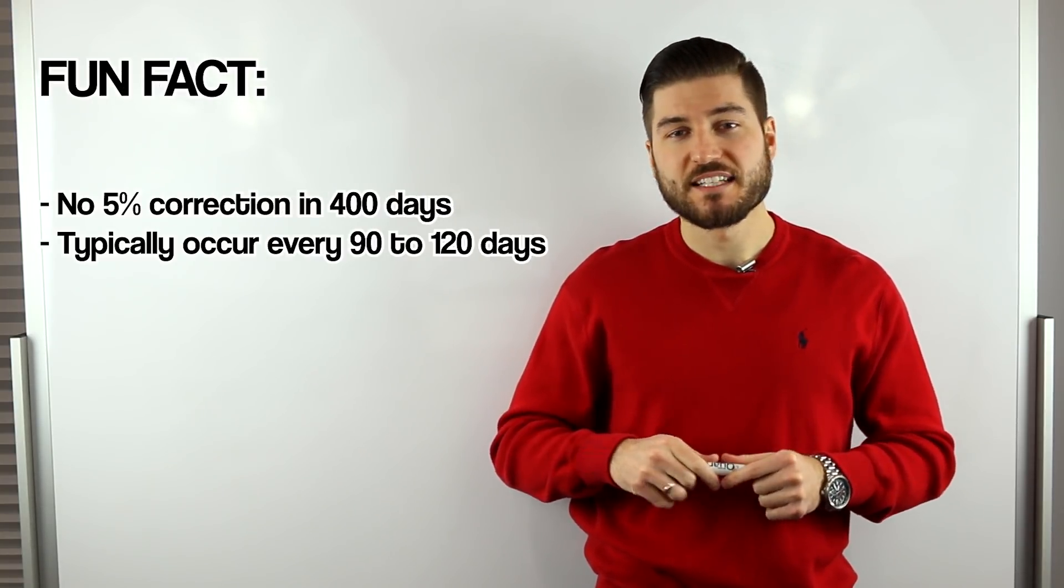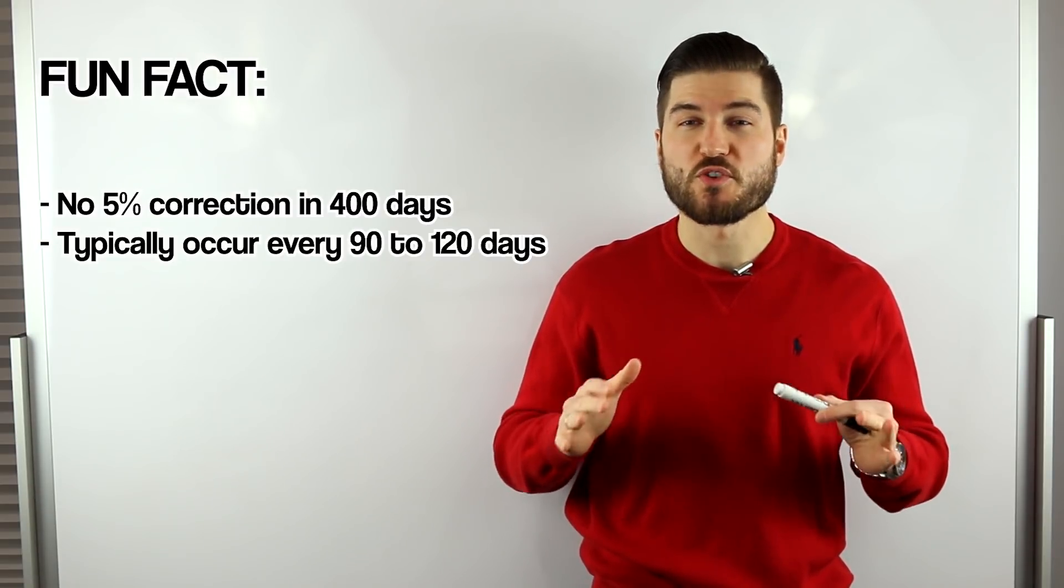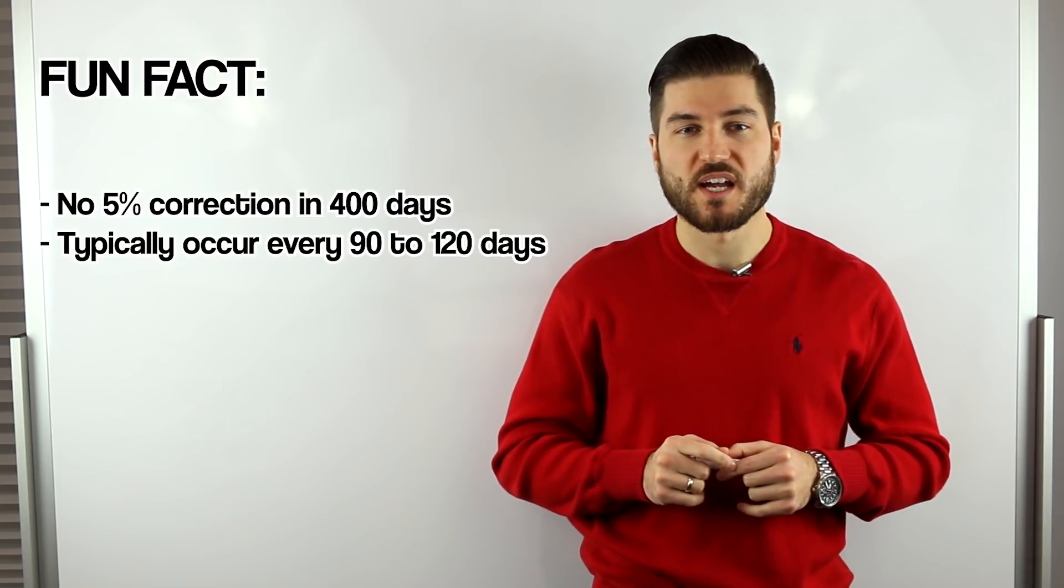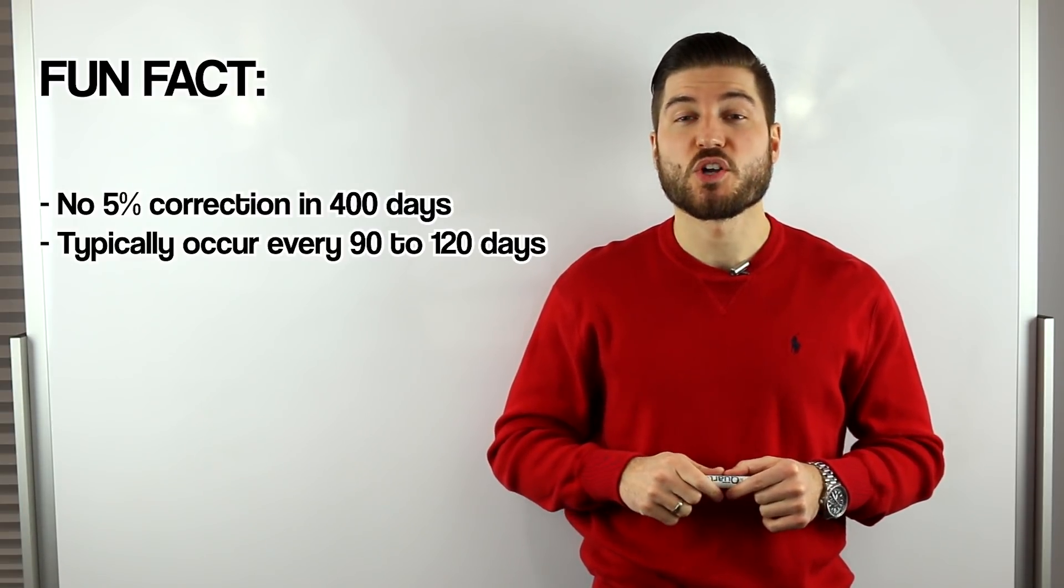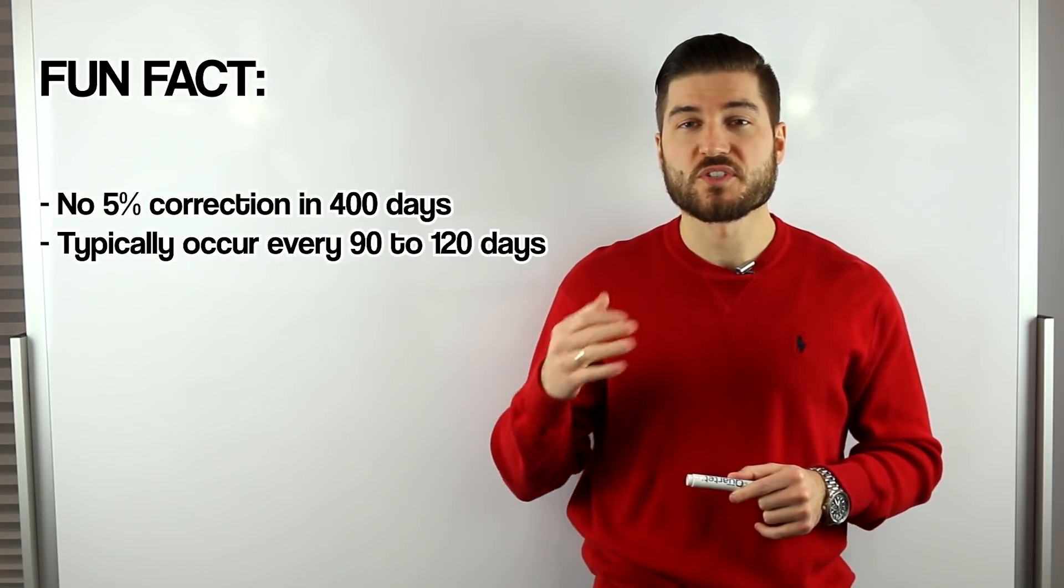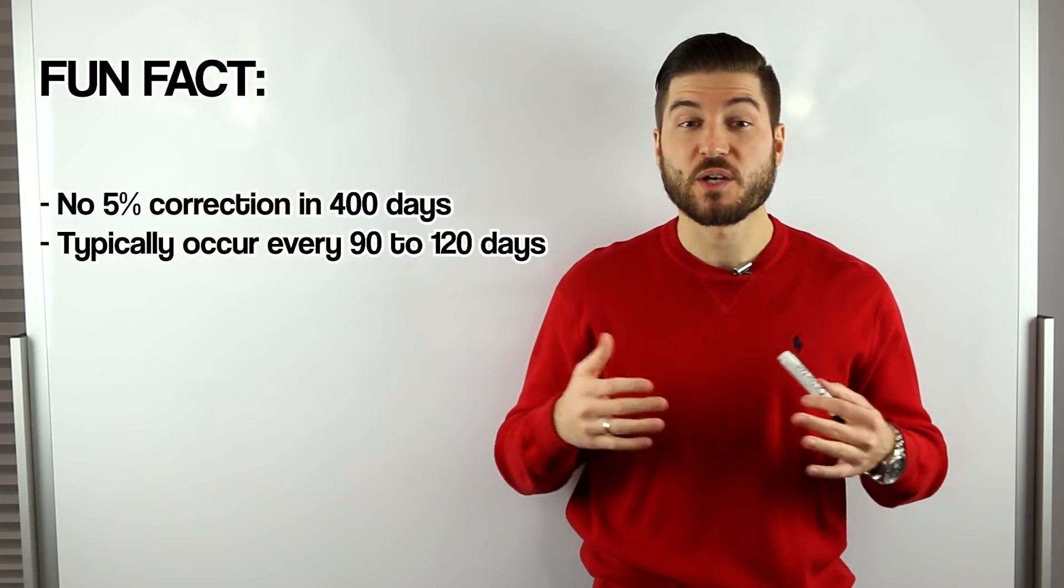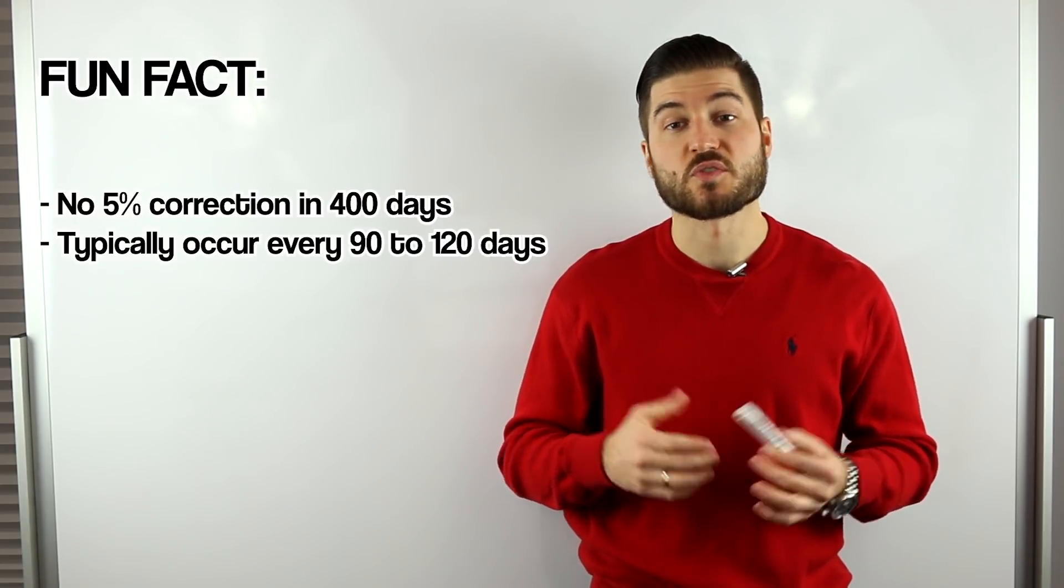So here's a quick little fun fact. The market has not had a 5 percent correction for more than 400 days. That's over one year you guys. Historically corrections of 5 percent happen every 90 to 120 days. So a lot of investors also feel that we're simply dealing with a highly valued equity market and it's supported by strong economic data and earnings which is true.